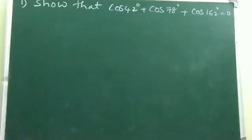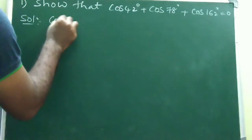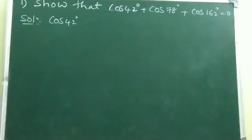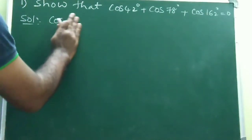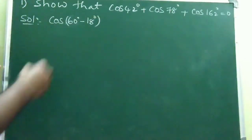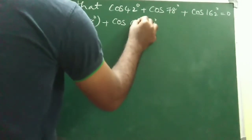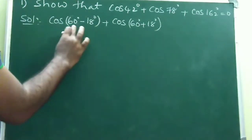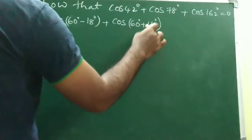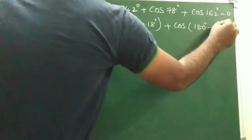But using the compound angle concepts, we can solve this very easily. We write cos 42° as cos(60° - 18°), and cos 78° as cos(60° + 18°). And cos 162° can be written as cos(180° - 18°).